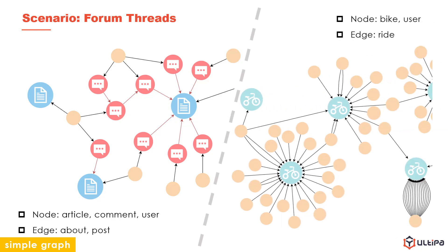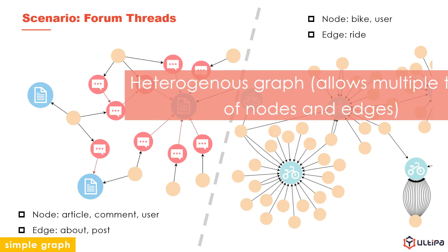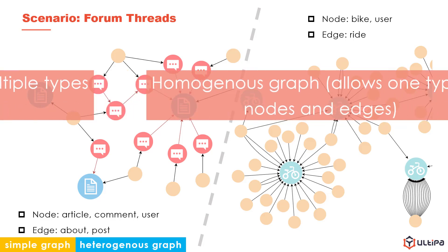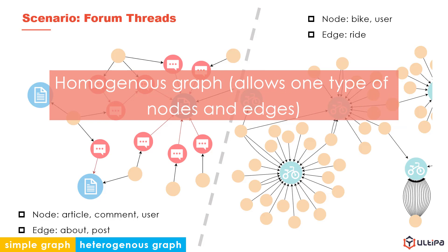Compare this graph with the one in the previous scenario and count their types of nodes and edges. They both have more than just one type of nodes and edges. A graph that contains multiple types of nodes or edges is a heterogeneous graph, and both these two graphs are heterogeneous graphs. A graph composed of only one type of nodes and edges is a homogeneous graph.